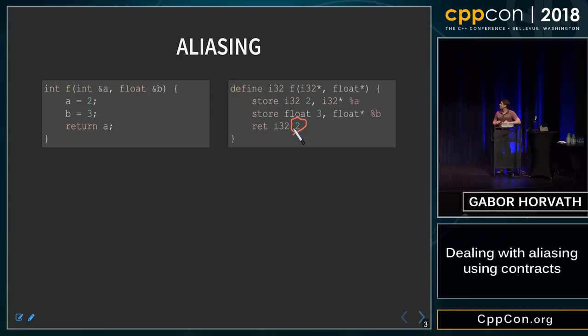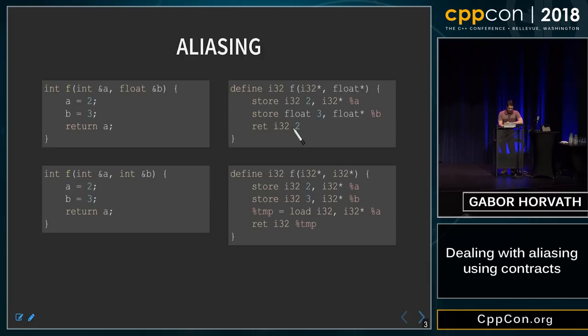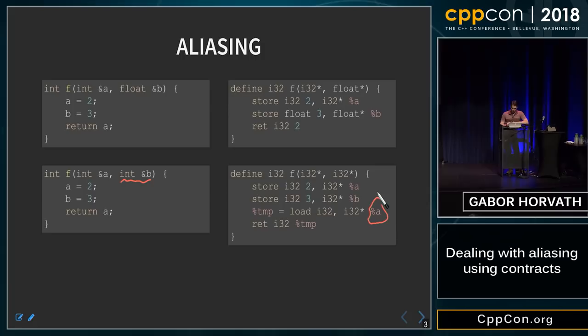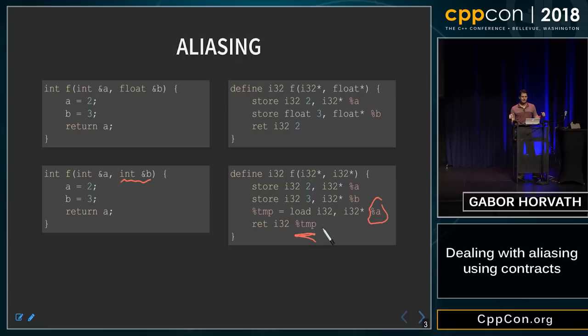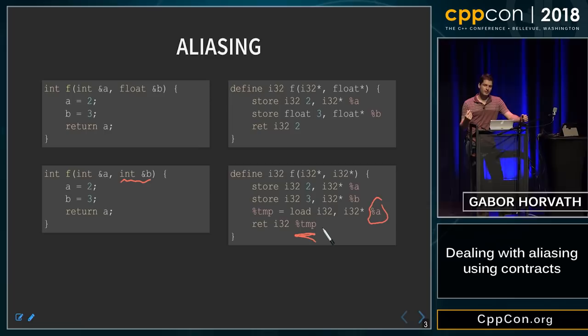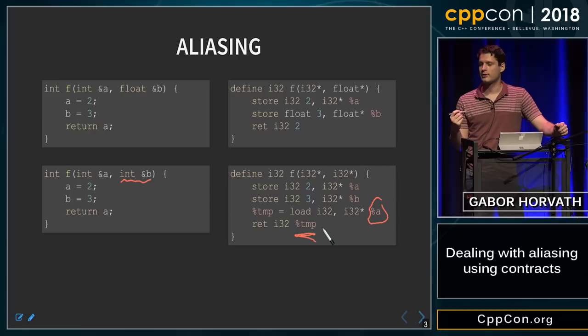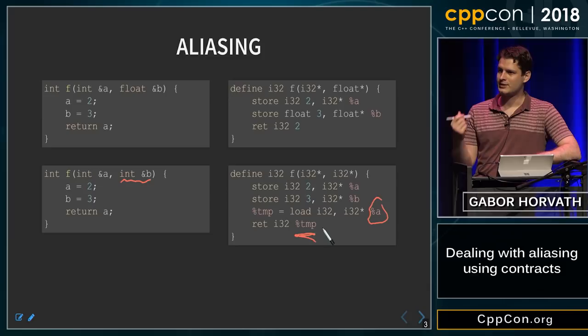So actually we write twice into the memory, and when we return a value, we will not do any memory operation. But if we look at a slightly different example where we take two references to integers, the compiler will generate slightly different code where we will write into both of these arguments and then read back the value of a from memory and return that value.